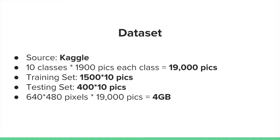We acquired our dataset from Kaggle. There are a total of 10 classes of data. In each class, there are 1,900 pictures, which sums up to 19,000 pictures in total. We divided the data into a training set and a testing set. The training set has 1,500 pictures per class and the test set has 400 pictures per class. Each original image is 640x480 pixels, so the total data size is 4GB.